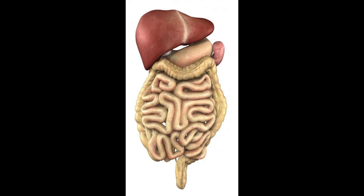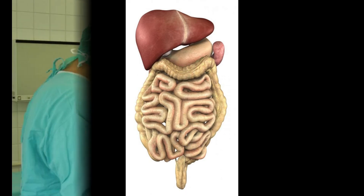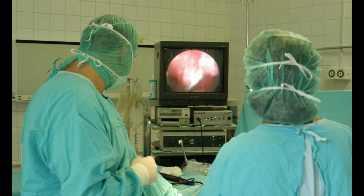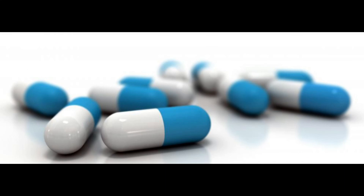Surgery is another possible treatment for liver cysts. It is most often used when cysts are very large, causing too much pressure, or contributing to other health problems. It may also be used when cysts have failed to respond well to other types of treatment. Not all liver cysts are treated with open surgery — some are treated with laparoscopic surgery, which involves only a small incision through which the cyst is removed. The type of surgery used typically depends on how large the cyst is and the part of the liver in which it is located.